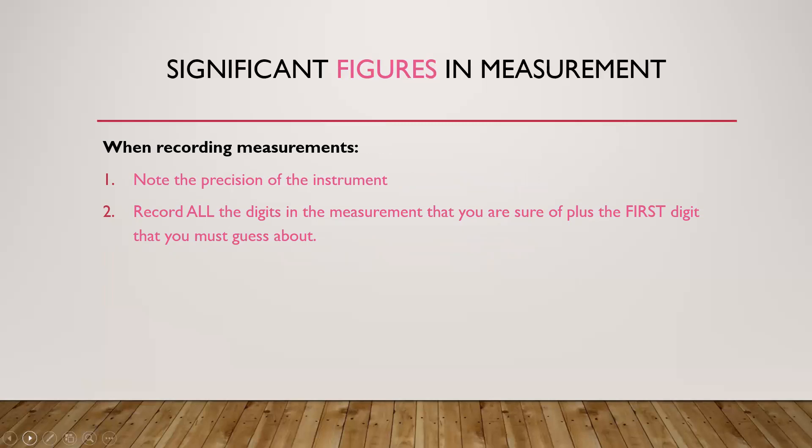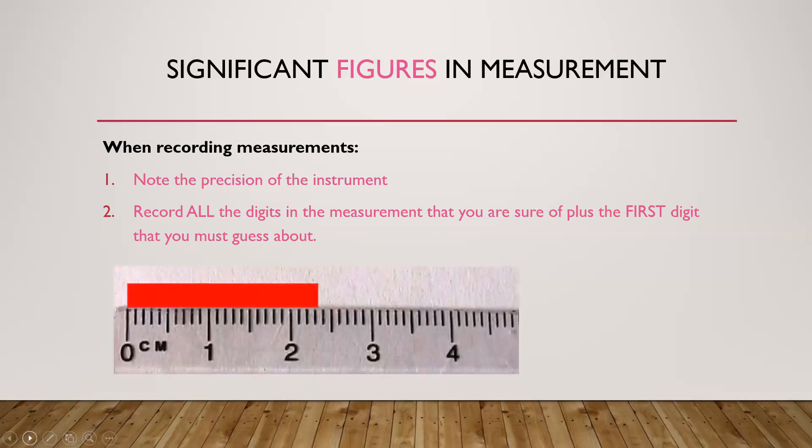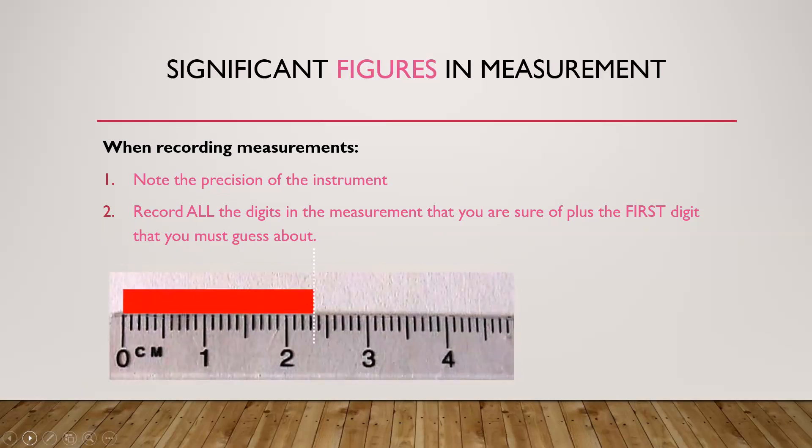Let's illustrate this principle with an example. The ruler shown in the image can be read to a precision of 1 millimeter, which is 1 tenth of a centimeter or 0.1 centimeters. Looking at the right end of the object, we notice that it lines up with the ruler past the 2.3 centimeters mark.